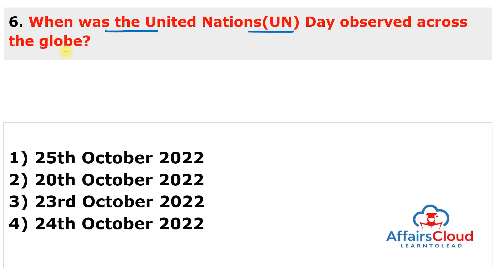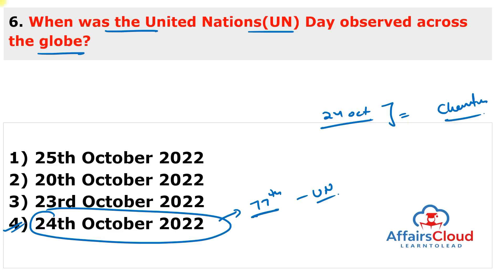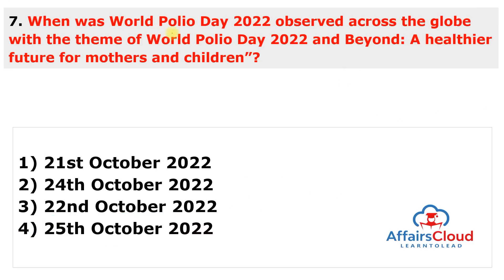Next question: when was United Nations Day observed across the globe? The answer is 24th October 2022. The 24th of October 2022 marks the 77th anniversary of the foundation of the United Nations. The UN is annually observed across the globe on 24th October to mark the anniversary of the coming into force of the UN Charter. The UN Chamber Music Society presented a virtual concert in celebration of the 77th anniversary.